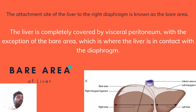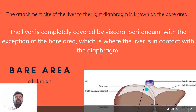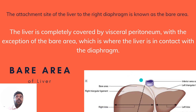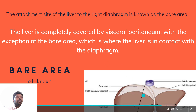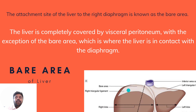Coming to the bare area of the liver: the attachment site of the liver to the right diaphragm is called the bare area. The liver is completely covered by visceral peritoneum, with the exception of the bare area, where the liver is in direct contact with the diaphragm.